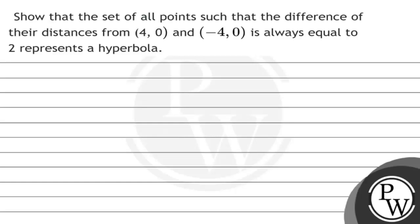Hello, so let's see the question. The question says: show that the set of all points such that the difference of their distances from coordinates (4, 0) and (-4, 0) is always equal to 2, represents a hyperbola. Here we have to do this question, and for that the key concepts are as follows.